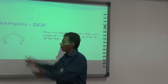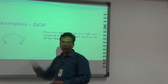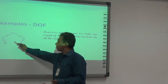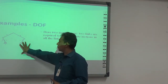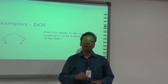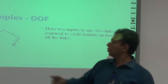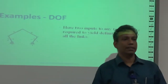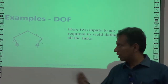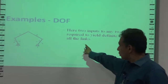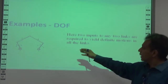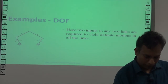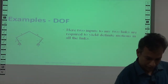In other words, to draw the configuration of this five-link mechanism, in addition to knowing all the link lengths, I need to know two angles. This clearly indicates that the mechanism has two degrees of freedom.